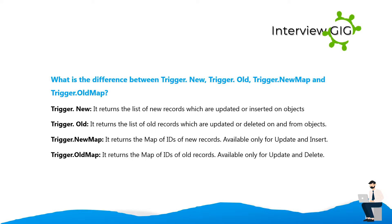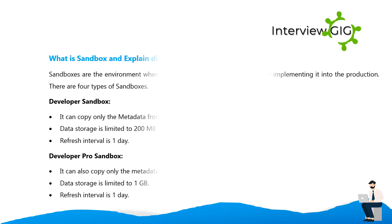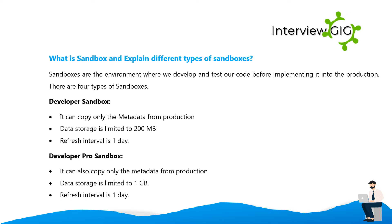What is the difference between Trigger.new, Trigger.old, Trigger.newMap, and Trigger.oldMap? Trigger.new returns the list of new records which are updated or inserted on objects. Trigger.old returns the list of old records which are updated or deleted on and from objects. Trigger.newMap returns the map of IDs of new records, available only for update and insert. Trigger.oldMap returns the map of IDs of old records, available only for update and delete.